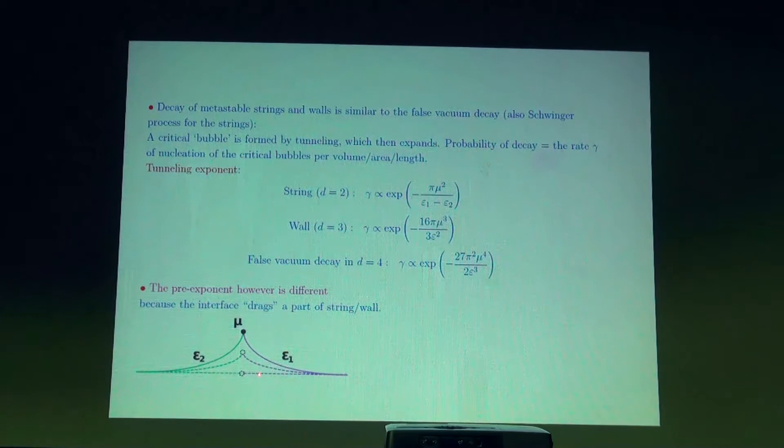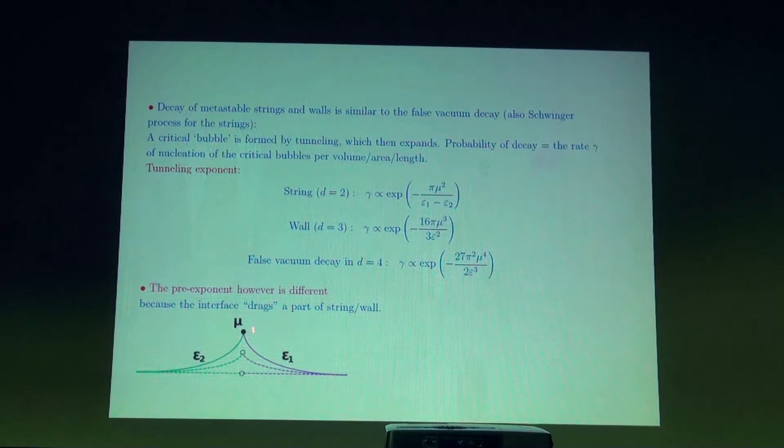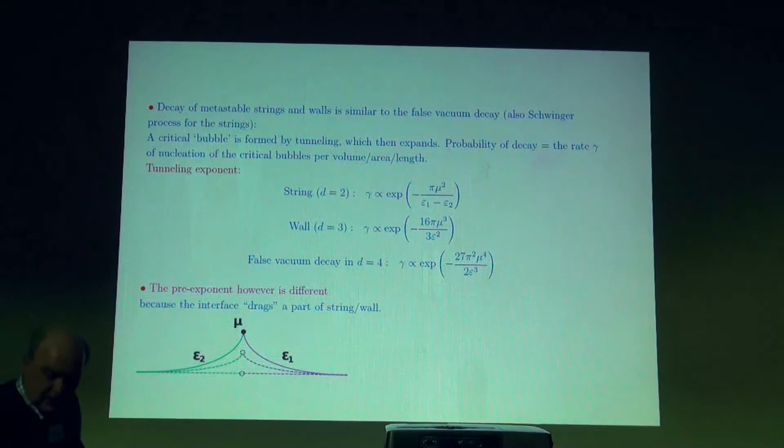In the case of string breakup, there is motion of the string in perpendicular directions. When the interface connecting the strings with tensions epsilon_1 and epsilon_2 moves in the perpendicular direction, there is not only motion of the mass associated with the interface, but also this interface drags a part of the string. That effect of dragging extra mass of the string must be taken into account.